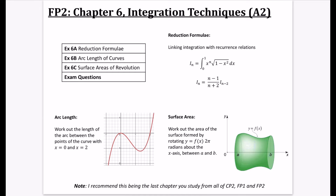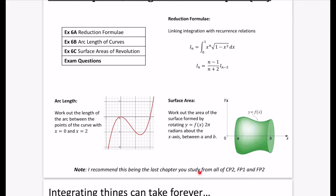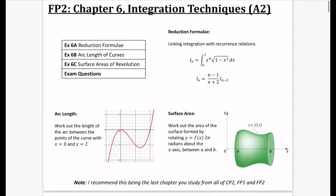We're on to FP2, Chapter 6, Integration Techniques, and this is all in the A2 section — none of this is in AS. It's worth saying before we start this whole chapter that I really do recommend this being the last chapter you study from all of Further Maths. So you're obviously doing Core Pure 2, Further Pure 1, and Further Pure 2, and I would really recommend this as the last thing.